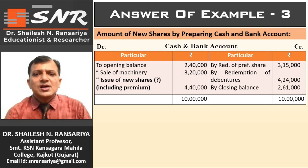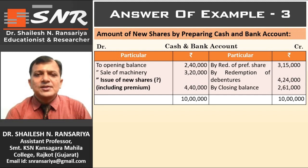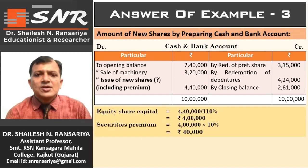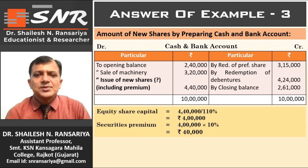This Rs. 4,40,000 is the amount of new shares. In the example, the instruction is given that new shares are issued at 10% premium. So this Rs. 4,40,000 is the amount including premium. First, we have to separate the amount for share capital and the amount for security premium. Face value of new equity share capital equals Rs. 4,40,000 divided by 110%, so we get Rs. 4,00,000. Now, the security premium is 10% on Rs. 4,00,000, which is Rs. 40,000.